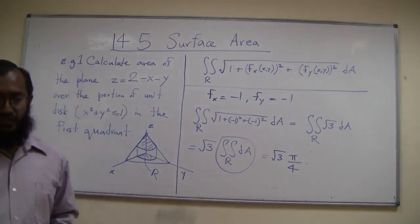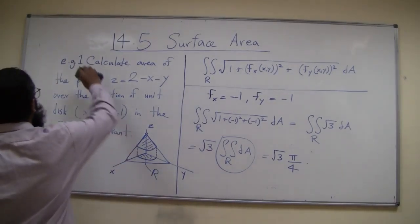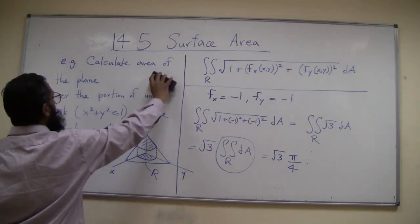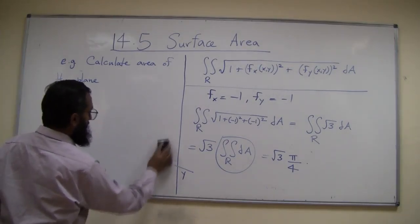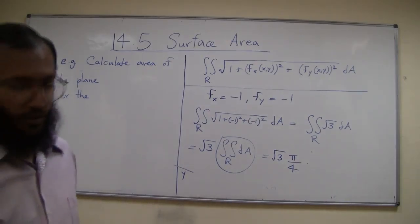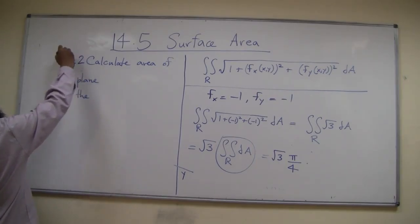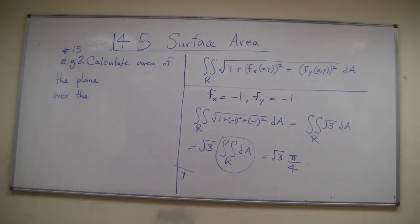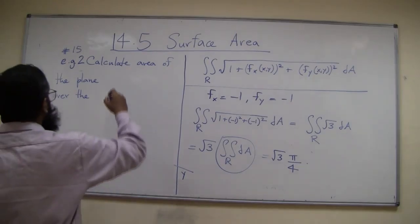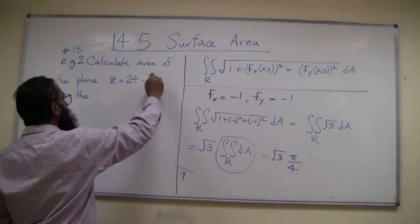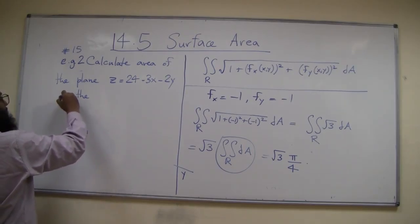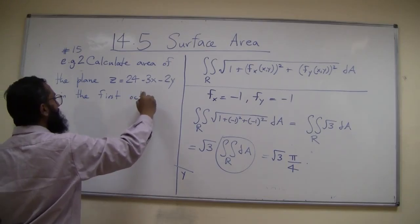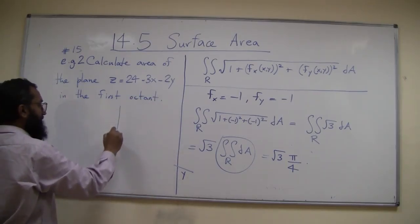Let's do another example, slightly different. This is problem number 15 in section 14.5. Calculate area of the plane z equal to 24 minus 3x minus 2y over the area of the plane in the first octant. This is now a slightly different problem. You have this plane with value at x and y zero equal to 24.